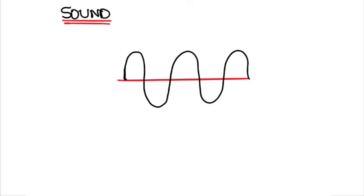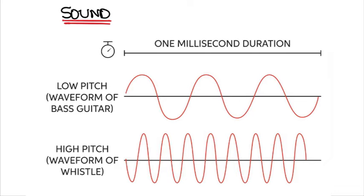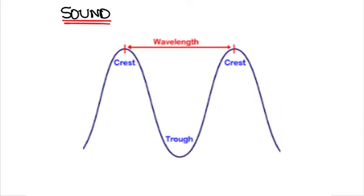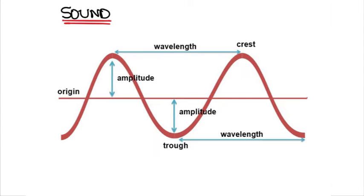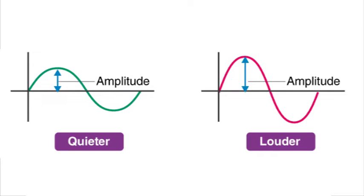Now let's talk about sound. Sound waves are vibrations in the air. The human ear senses these vibrations and interprets them as sound. Each sound wave has a frequency, which is the number of waves per second; a wavelength, which is the distance between two consecutive crests or troughs; and an amplitude, which is the distance from the center line to the top of a crest or to the bottom of a trough. The amplitude specifies the loudness of the sound.